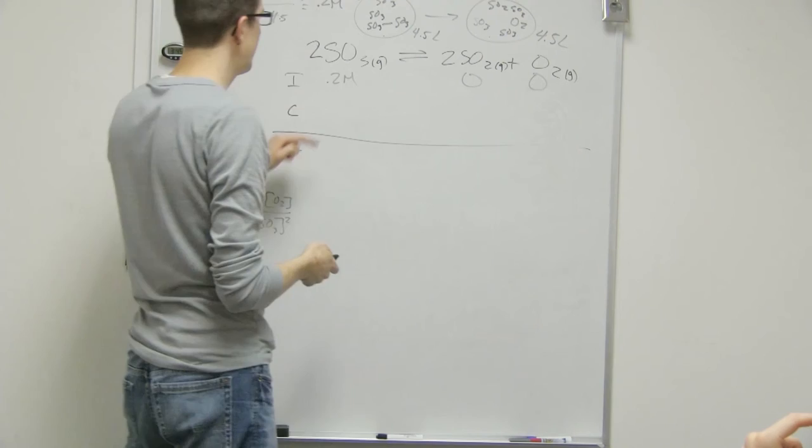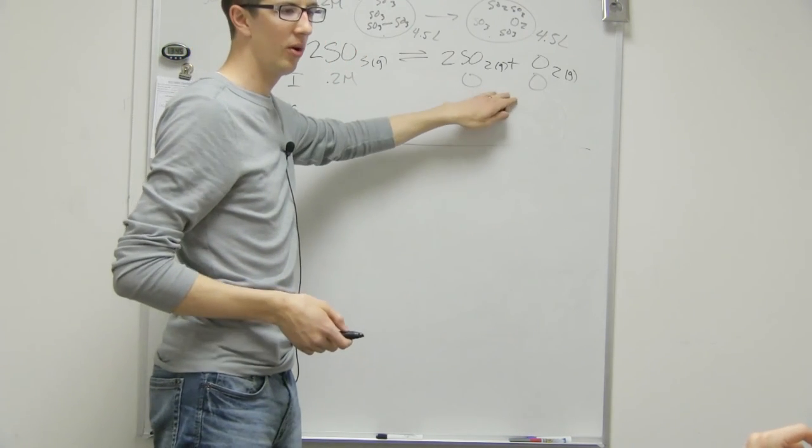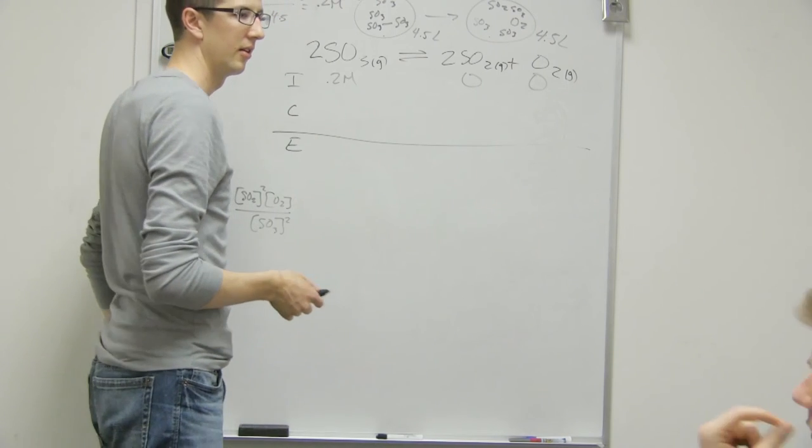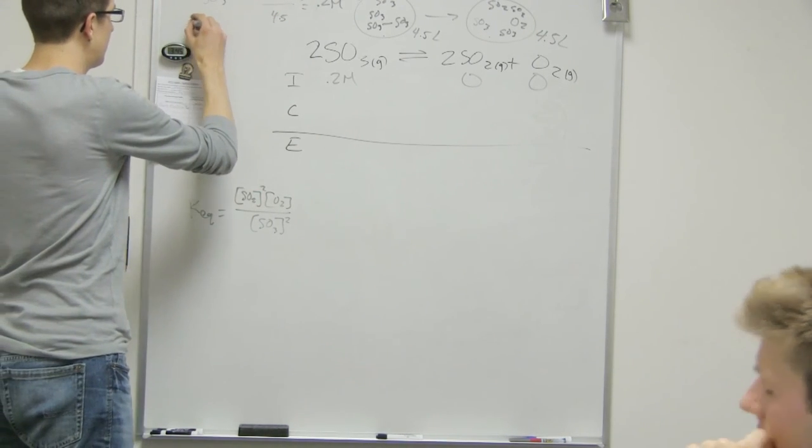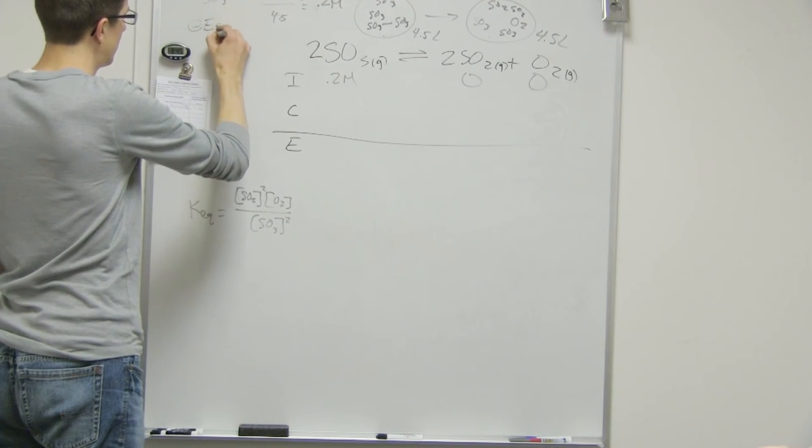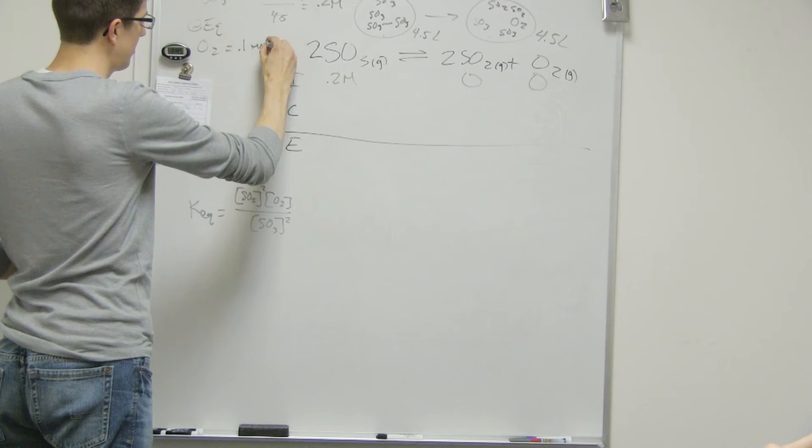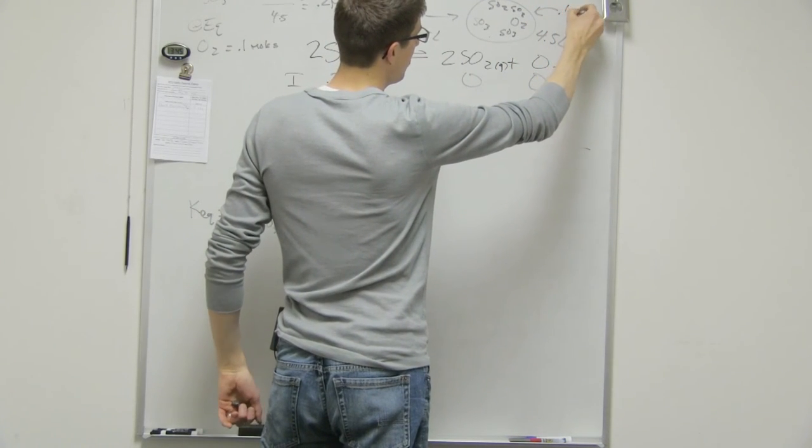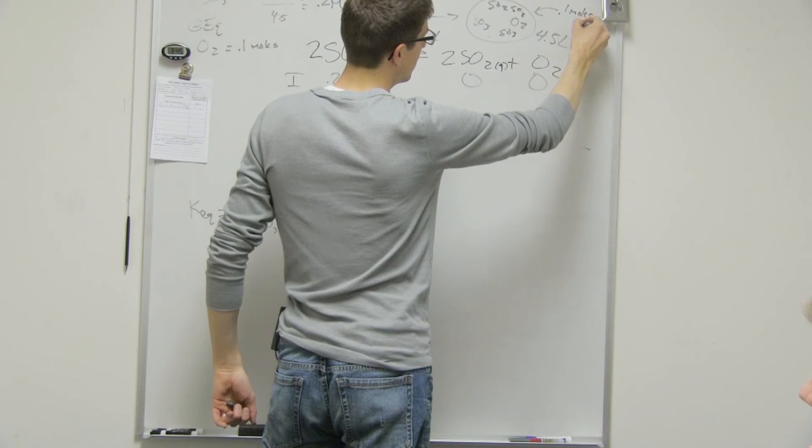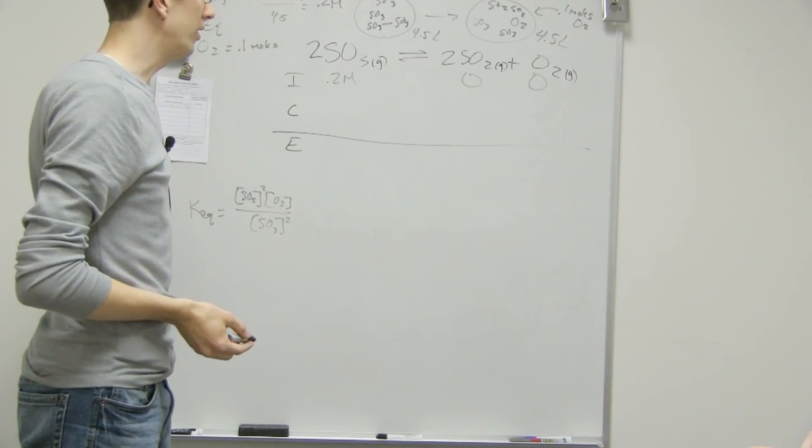So then we've been just told another piece of data. We said something about O2, what was it again? There is 0.1 moles. So at equilibrium we have 0.1 moles. So at this point we now go, oh we have 0.1 moles of O2 in the 4.5 liters. That's great, that's good to know.